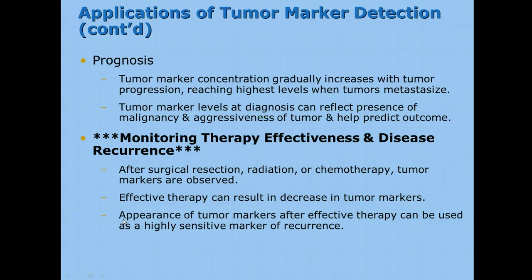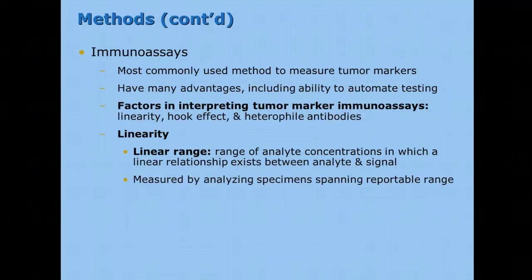After surgical resection, radiation, or chemotherapy, tumor markers are observed. The effect of therapy can result in a decrease of those tumor markers, hopefully. The appearance of tumor markers after therapy usually means that recurrence has happened. To test for these, we use immunoassay, the same as for hormones — it's a great way to find small quantities of things in the human bloodstream.